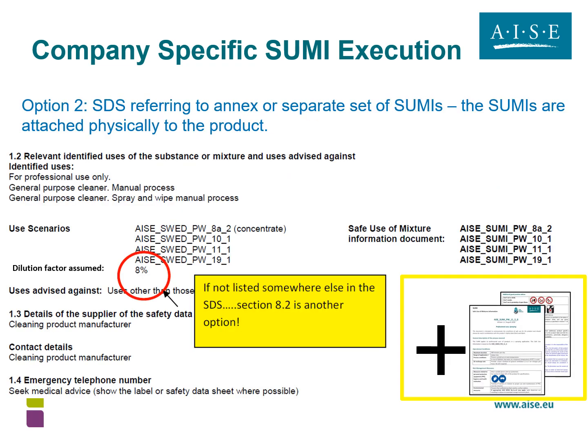For option two, the SDS refers to an annex or a separate set of SUMIs, and the SUMIs could be attached physically to the product. Here we have the dilution factor highlighted in section 1.2. If it's not listed in section 1.2, it could be somewhere else, such as section 8.2 of the safety data sheet. The SUMI codes are clearly listed and the AISC SUMI documents would be attached physically to the product.